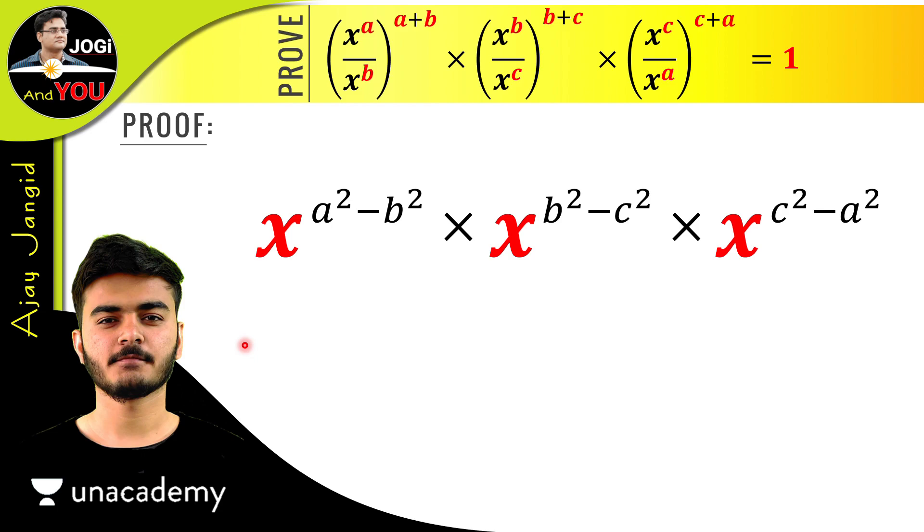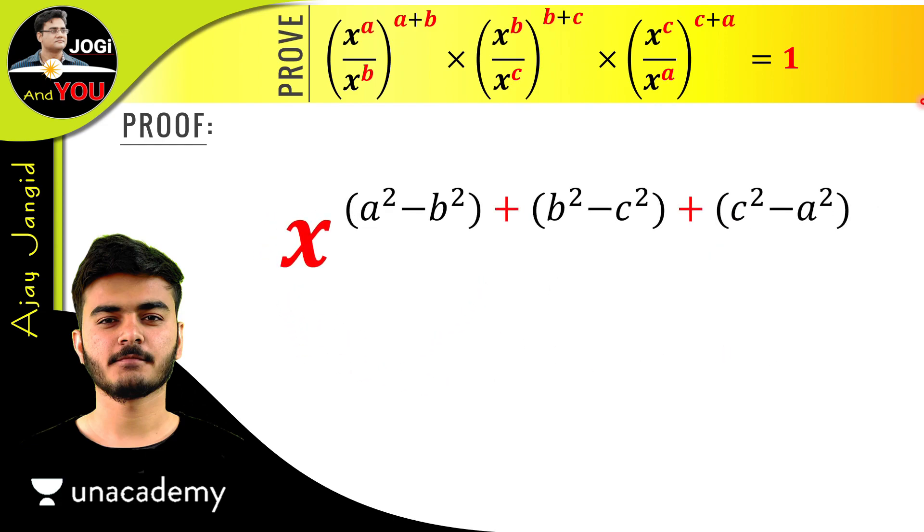Now one more rule of powers and exponents will be applied here: if powers are different and base is the same and all bases are multiplying, then we will do the sum of powers. Just open all these brackets and we have x^(a² - b² + b² - c² + c² - a²).